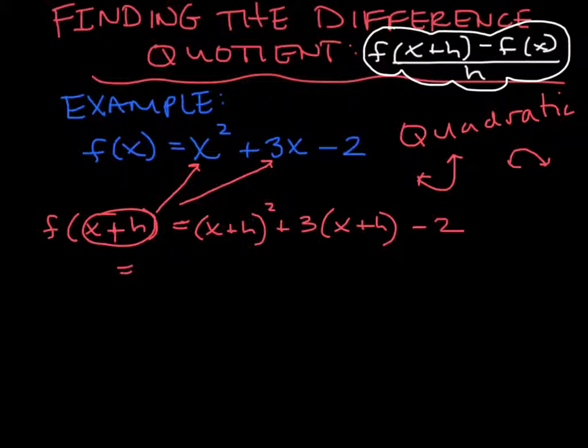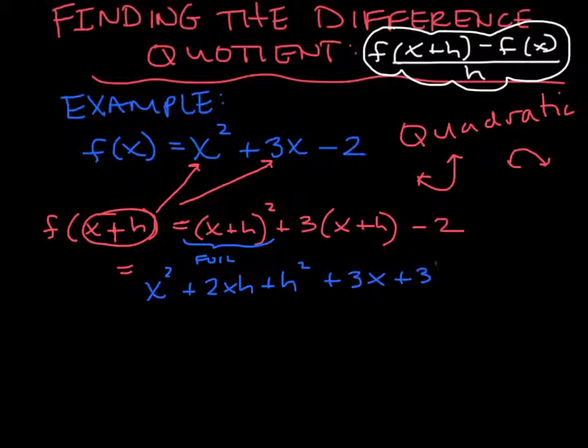So instead of x squared I'm going to write (x + h)² + 3(x + h) - 2. So remember this part right here I have to actually foil out. When I do that, if I write that out twice and foil it I get x² + 2xh + h². Then I'll distribute. So all of that is what I have just from that f(x + h).